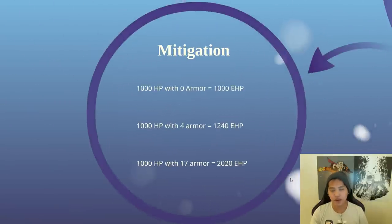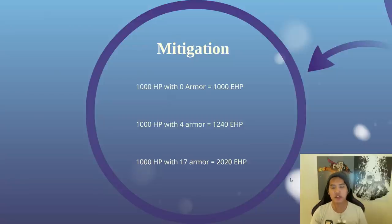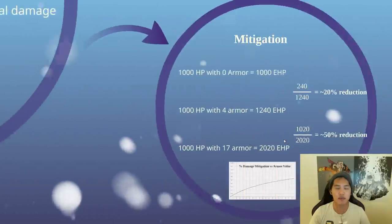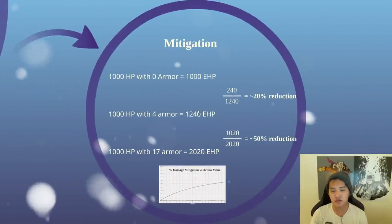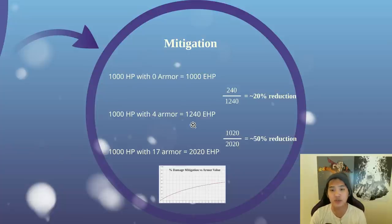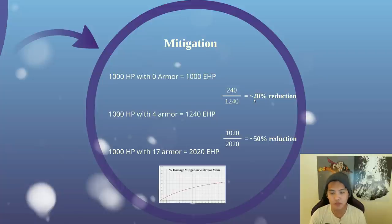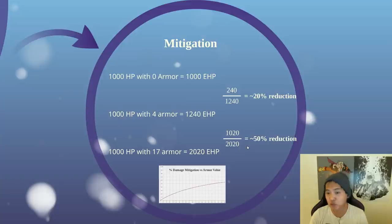But now that we have all this EHP, we actually want to see how much damage is mitigated — or just damage reduction. Using the same values: zero, four, and 17 armor giving 1000, 1240, and 2020 EHP respectively. With 1240 EHP versus 1000 HP, you're not taking 240 of the damage — that's how much damage is reduced. So 240 over 1240 EHP is around 20% reduction with four armor. And with 17 armor you have 2020 EHP — you're reducing 1020 of the 2020 damage coming in, which is roughly half of the physical damage being reduced, which is significantly high.